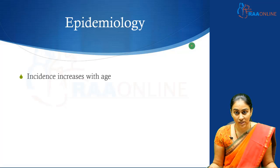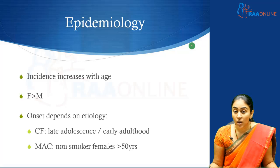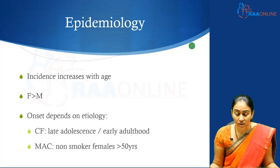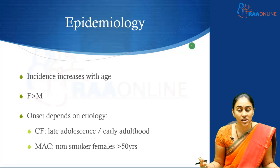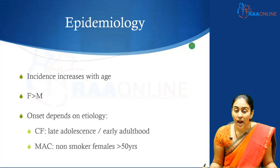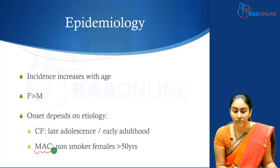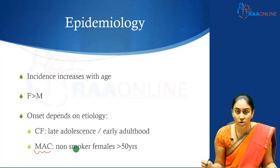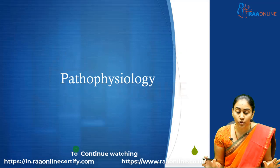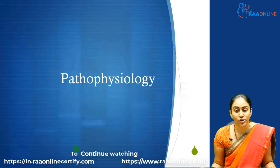Looking at the epidemiology of bronchiectasis: the incidence increases with age and there is a slight female predisposition. The onset typically depends on the etiology. For instance, in cystic fibrosis-associated bronchiectasis, there is a fairly early onset, typically observed in late adolescence or early adulthood. In bronchiectasis following non-tuberculous mycobacterial infections — the most common of which is the MAC complex, the Mycobacterium avium intracellulare complex — the onset is typically later and this largely involves females who are non-smokers.